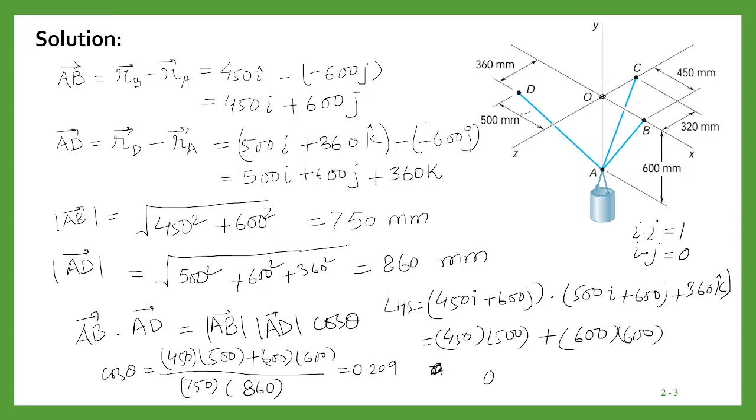And then theta will be equal to cos inverse of 0.209, and when you take this inverse you will get 77.90 degrees. So this is your final answer.